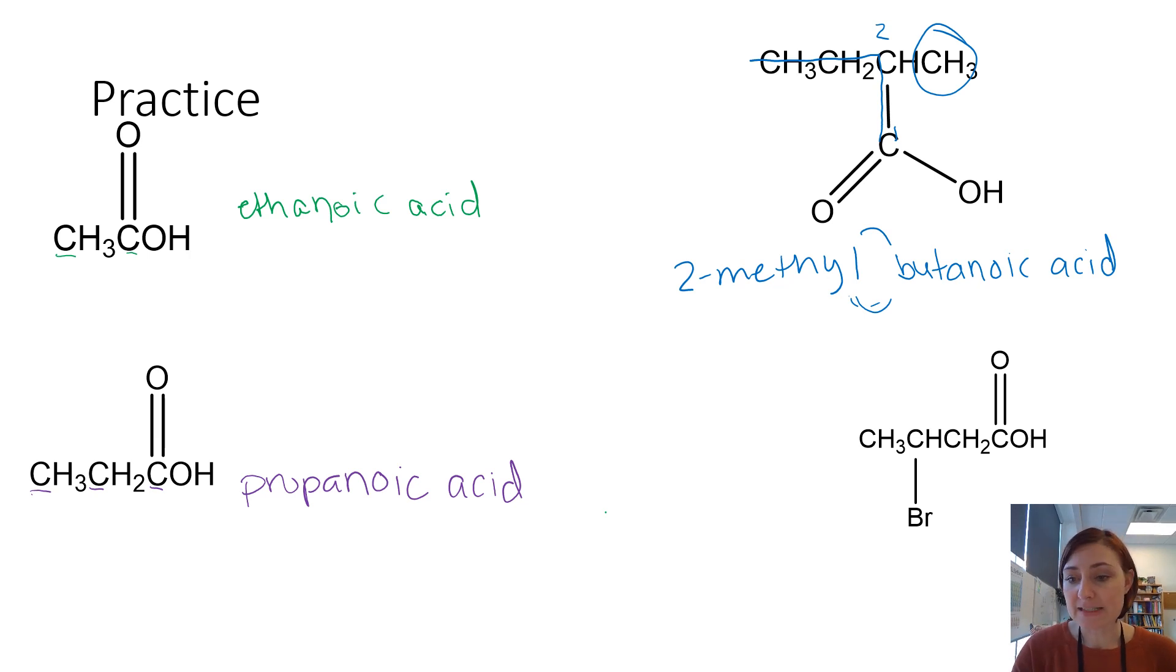In our last example, we have 1, 2, 3, 4 in our longest chain. So again, this is going to be butanoic acid for the parent chain. Oh my good grief, I've spelled this wrong. Hang on. It's butanoic acid. And we have a bromine coming off of position 1, 2, 3. So this would be 3-bromo-butanoic acid.